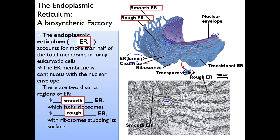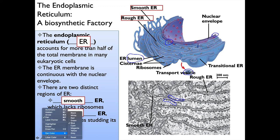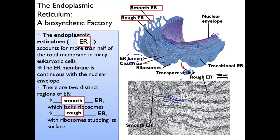Notice all the dots — those are the ribosomes that stud the surface. Ribosomes are protein factories. As they get messages from the nucleus on RNA, they turn it into proteins. RNA molecules pass through the ribosomes and the ribosomes build a protein. Proteins are amino acid chains that wind up folding upon themselves — that's the job of ribosomes.